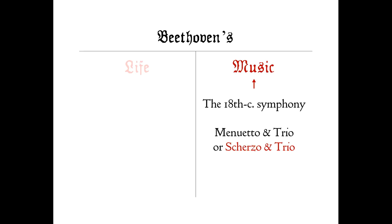Time is limited, so in this course we will not systematically study Beethoven's string quartets. But if they interest you, it's helpful to know that in Beethoven's time, the string quartet genre shared the same four-movement template as the symphony. So, although the instrumental sounds of a string quartet differ dramatically from those of an orchestra, you can take everything you learn about the norms and expectations of listening to a symphony and transfer it to the chamber music context of a string quartet.